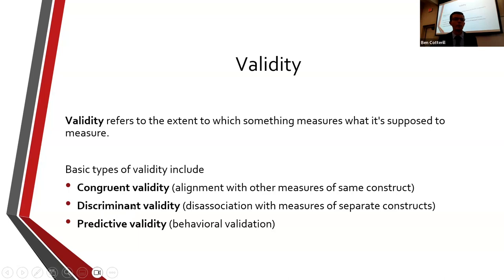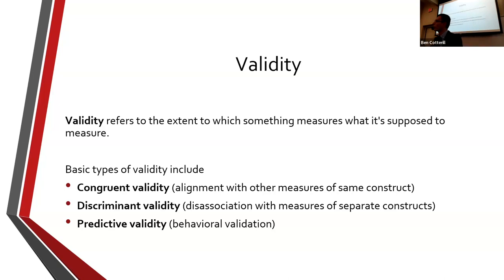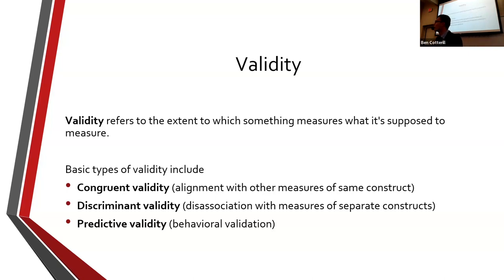Predictive validity means that if we're measuring something that's actually real, it should be able to predict differences in outcomes and behaviors. For example, maybe I have a questionnaire for measuring IQ. It should be able to predict real-life differences — those who score high should maybe do better in school compared to those who score worse, or if I give participants a challenging puzzle, those who scored highly on the questionnaire should do better on the puzzle. It should predict some outcome — a difference between people who scored differently.